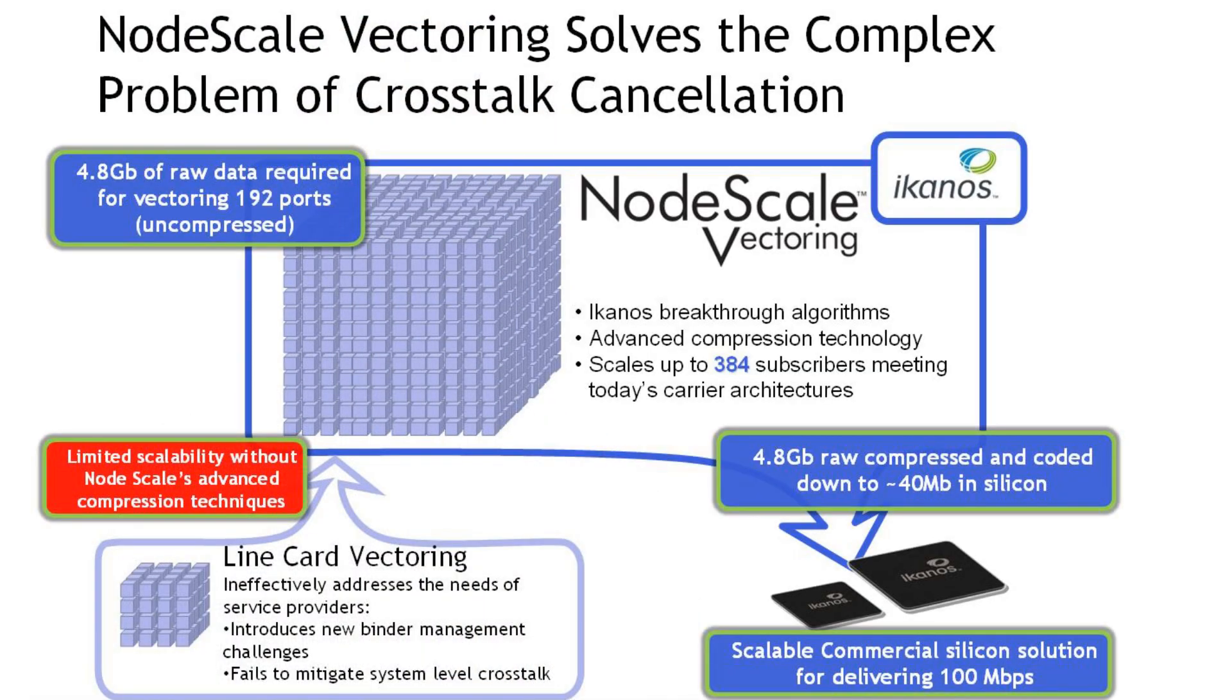Cancelling crosstalk at this scale presents significant computational challenges. Econos' unique patent-pending technology meets this challenge with a system-level silicon and software solution, enabling node-scale vectoring line cards, vector canceller cards, and G.DOT Vector customer premises equipment.